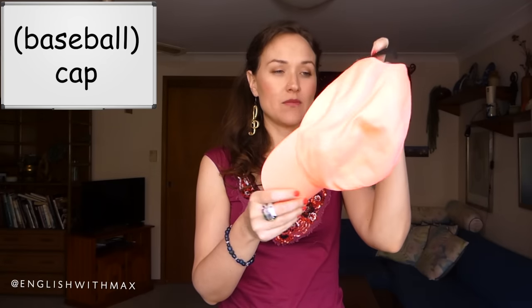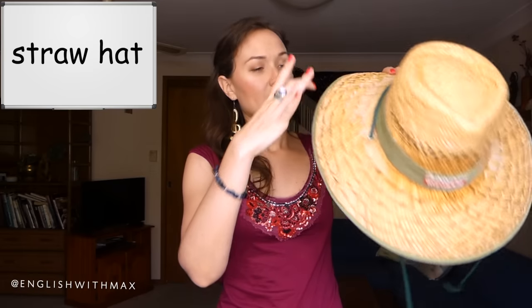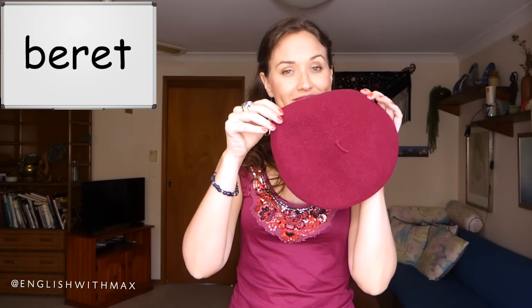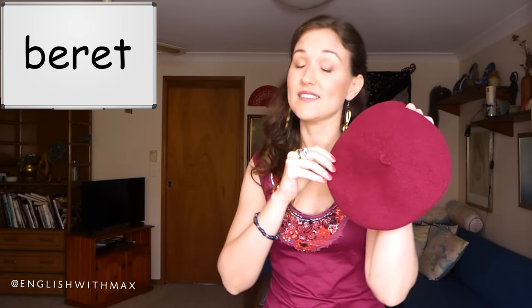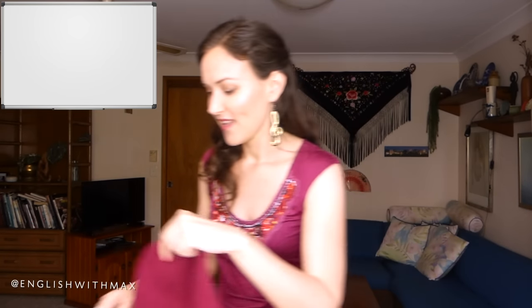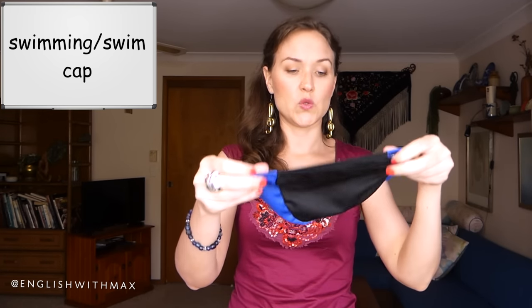And now we're going to look at hats. There are lots of different types of hats, so we'll just look at a few. This is a baseball cap — or you could just call it a cap, though baseball cap is more specific. This is a straw hat. The part that goes around a hat like this is called the brim. Here we have a beret — the T is silent, it's a French word. And this is a swimming cap — something you wear on your head when you go swimming at a pool.